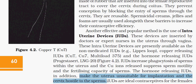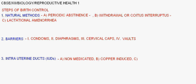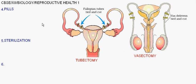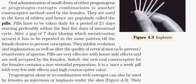Pills are basically of two types: daily or weekly pills, and emergency contraceptive pills used in cases of emergency such as rape or unwanted pregnancy.